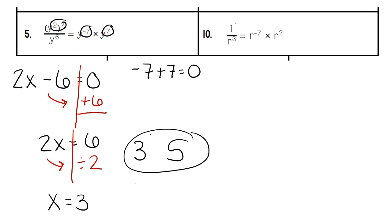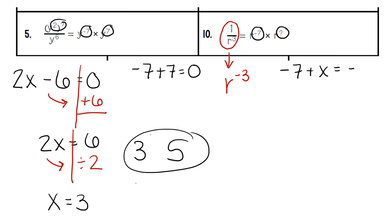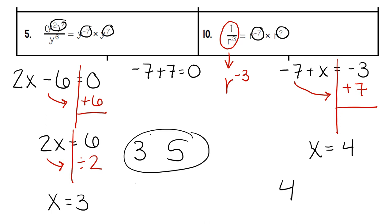In number 10, we start with the fractional expression 1 over r to the third. Any time we have a fractional exponent, we know it was originally a negative exponent, because all negative exponents are rewritten as fractions. So we're going to use negative 3 as our answer for the other side. On the other side, we're multiplying, so we add the exponents: negative 7 plus the unknown variable equals negative 3. We do the opposite — instead of negative 7, we do positive 7. Negative 3 plus 7 gives us a positive 4. Our missing exponent is 4, represented by the letter I at the bottom.